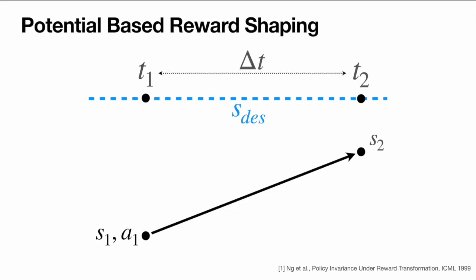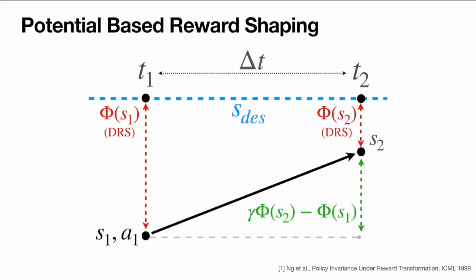Suppose we want to track some desired state over time. A common way to specify a reward is to penalize a function of the distance from the current state to the desired state at each time step. We will call this Direct Reward Shaping, or DRS. We can instead choose to reward the difference of a function over a time step, while accounting for discounting, which is known as Potential-Based Reward Shaping.